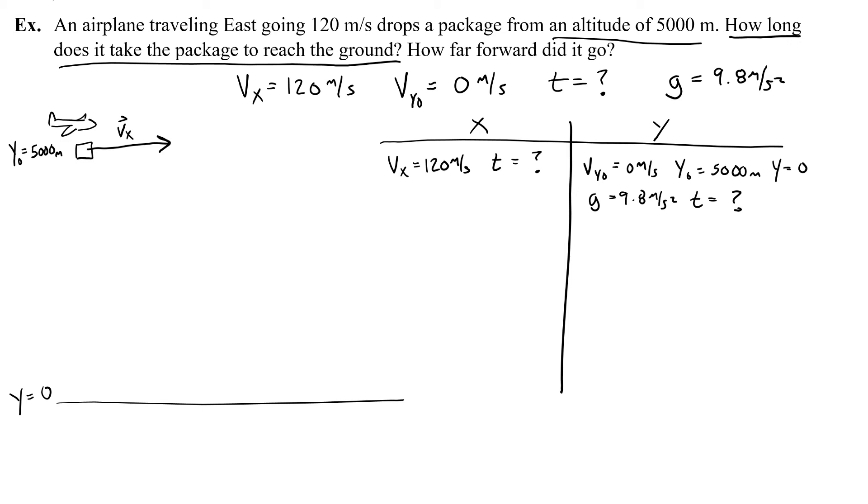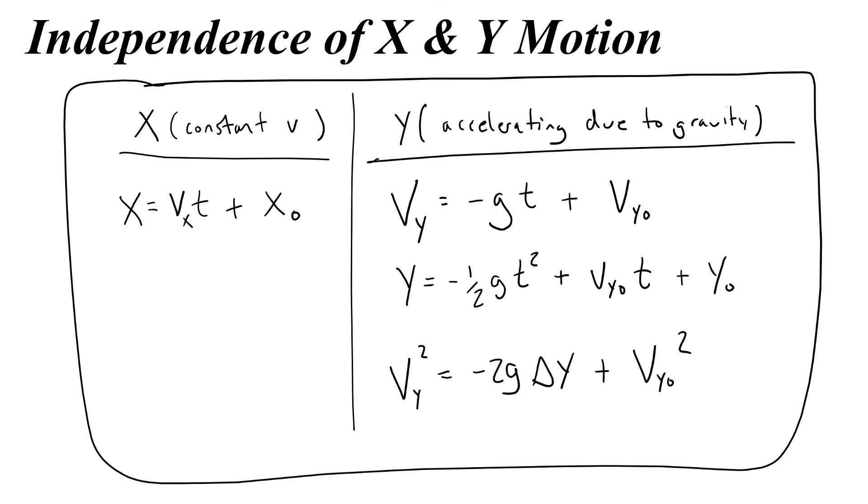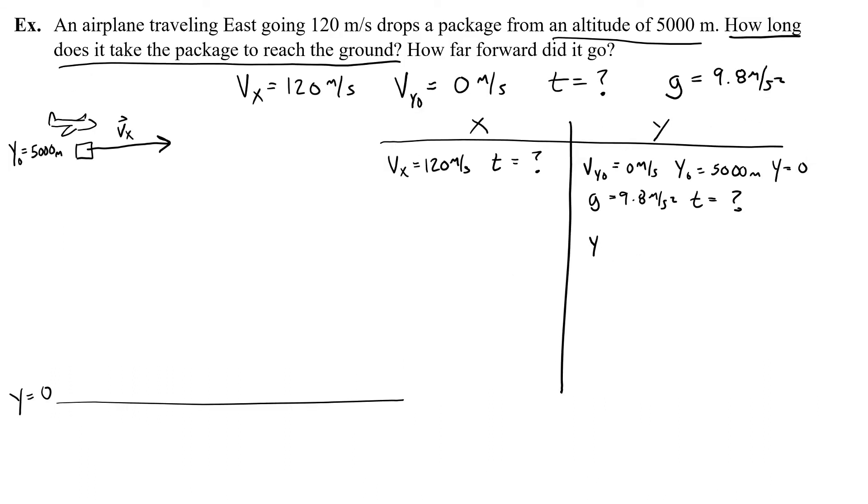So how am I going to find time? Well, I will look at all of my y information, which I've nice and neatly organized into my y column, and then I'll think, what is an equation that I can use from my y chart that I wrote down earlier that has all of that stuff in it? So I need something that has y, y0, vy0, t, and g, which is this equation. So I'm going to write that equation down on my y chart. y equals negative 1 half gt squared plus vy0 t plus y0.